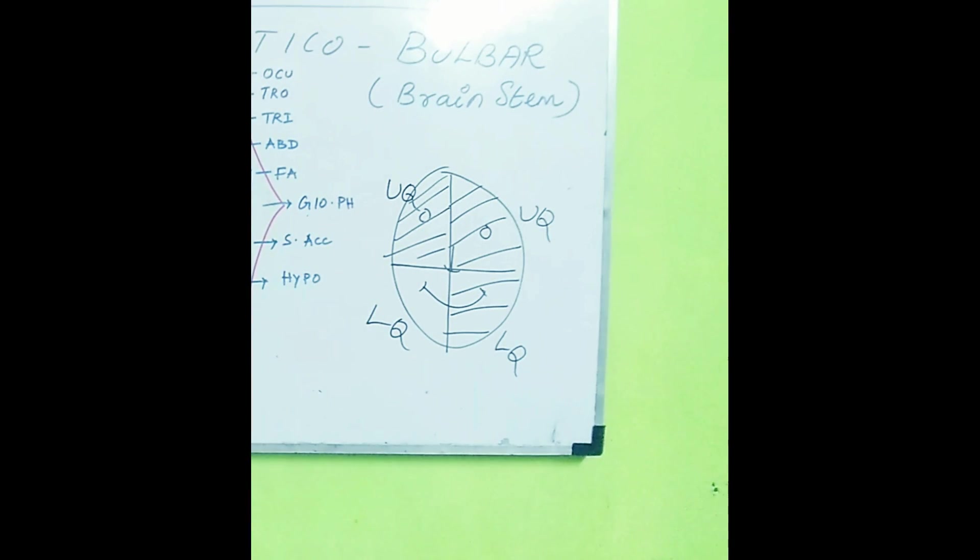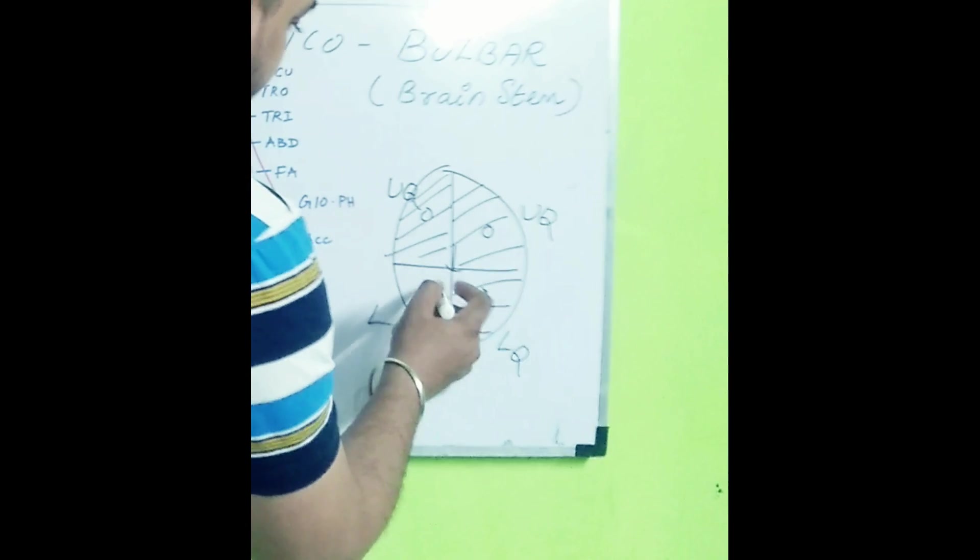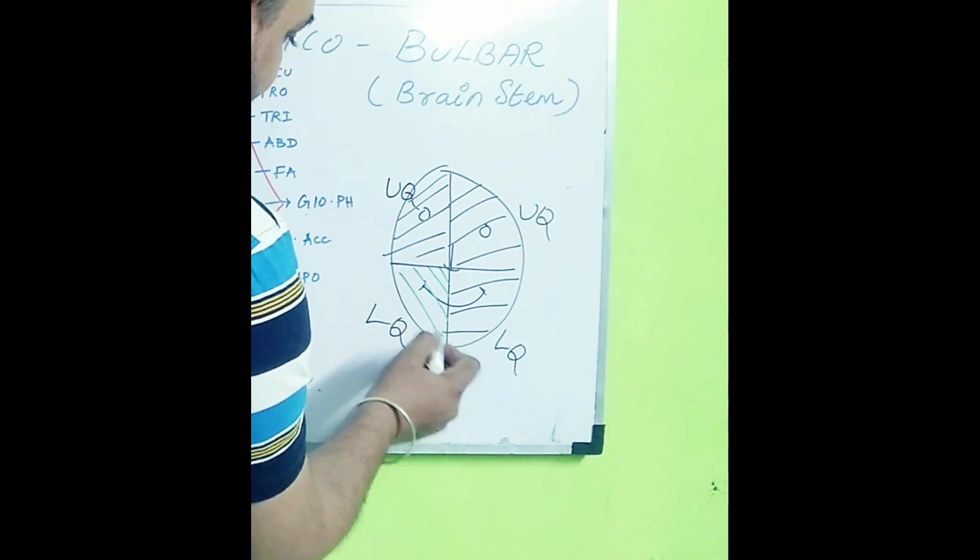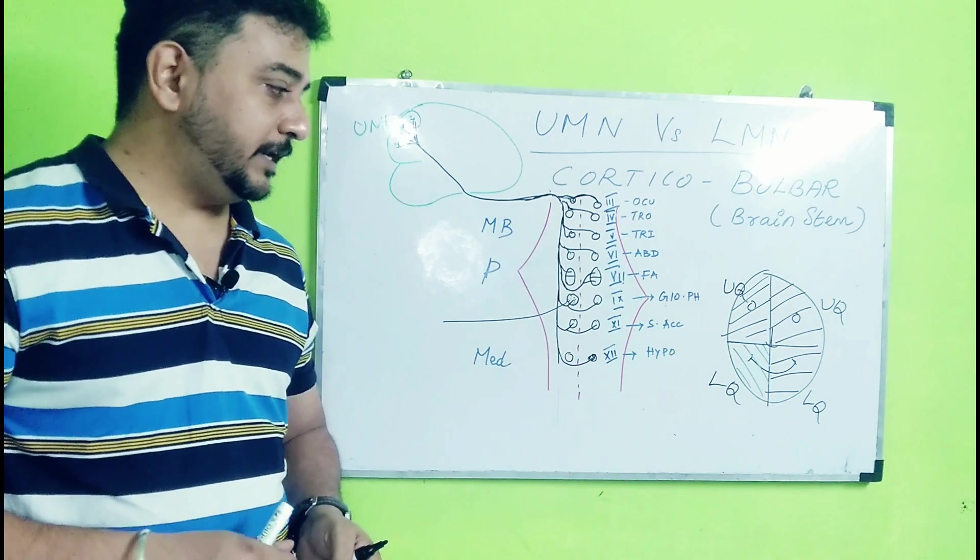Corticobulbar tracts innervate the upper quadrant on the ipsilateral side and both quadrants on the contralateral side. So when I have a problem in the left side corticobulbar tract, then what happens? It results only in the problem of the ipsilateral lower quadrant being affected. Remember this. We have a lot of topics to discuss and differential diagnosis to be done using the corticobulbar tract.